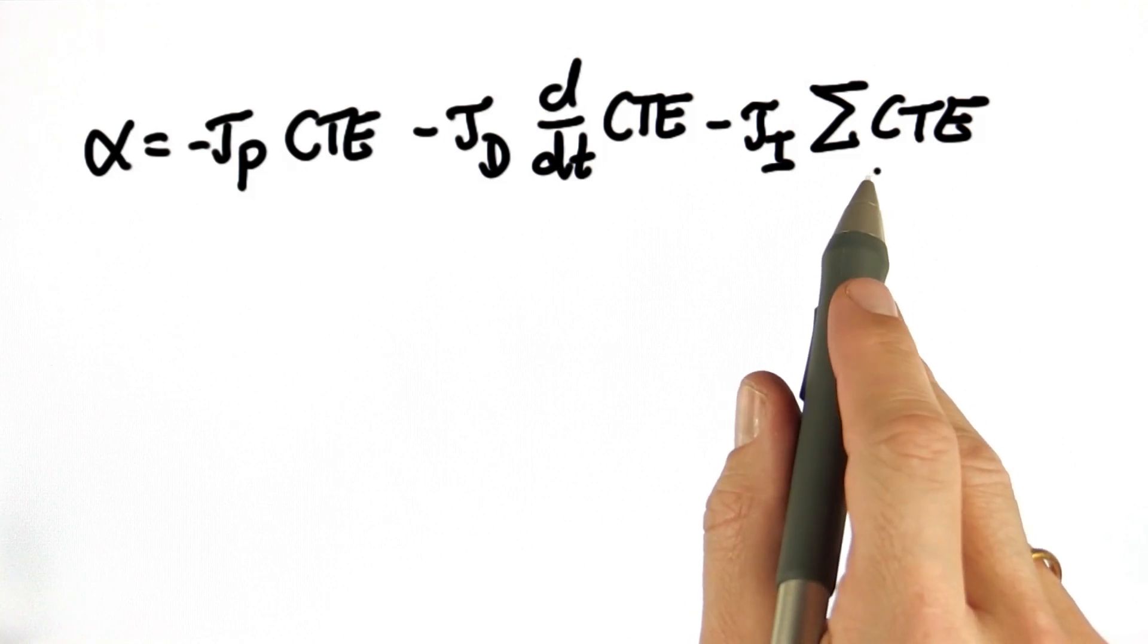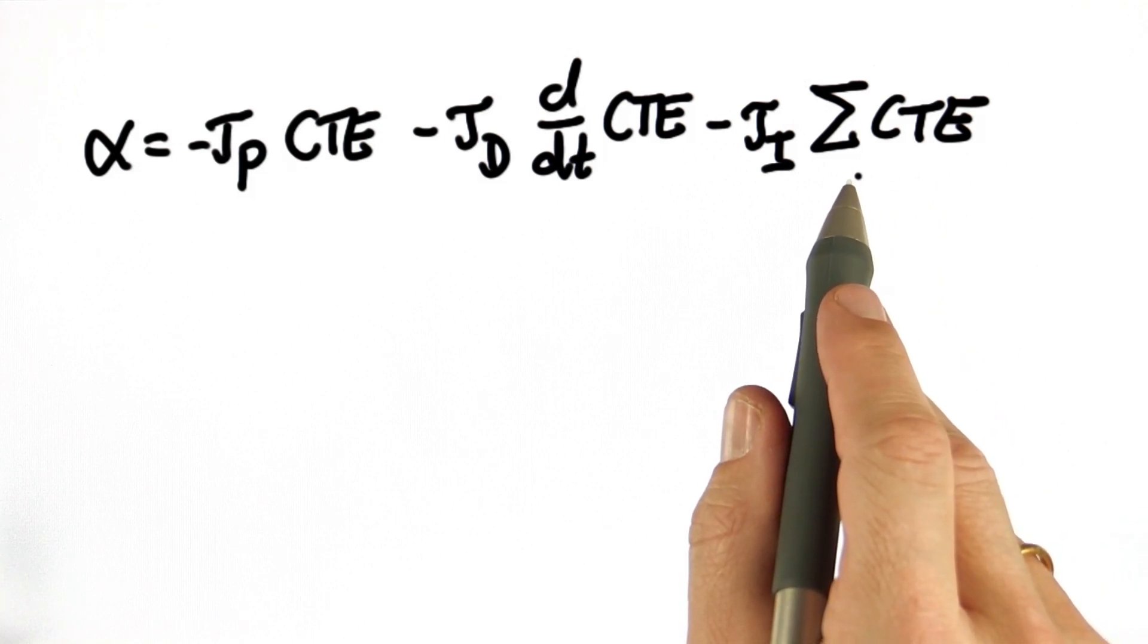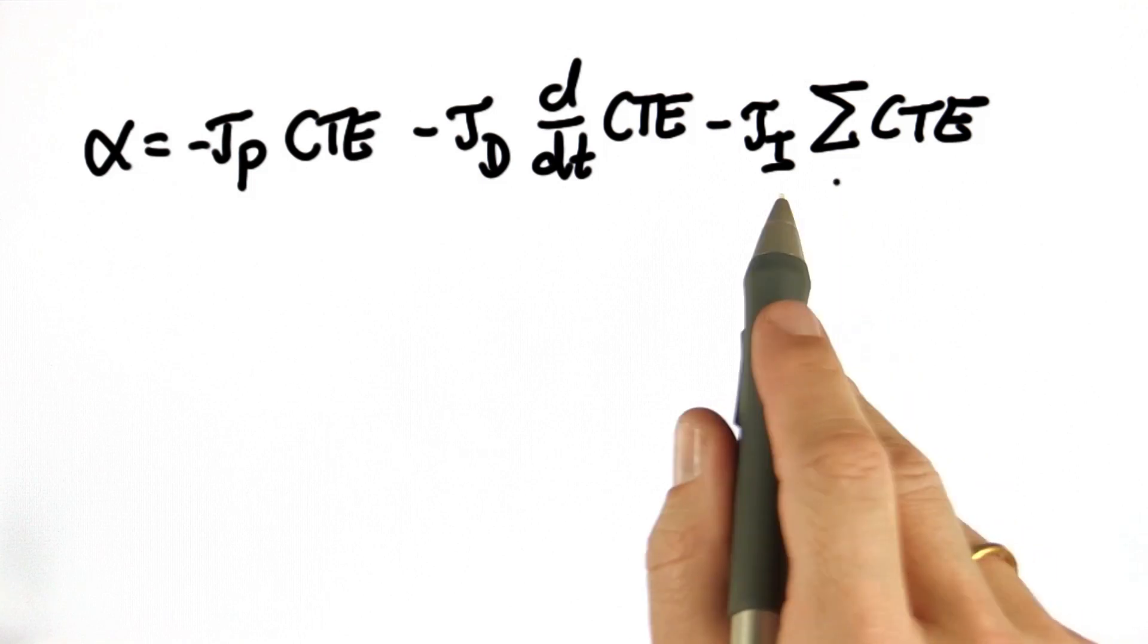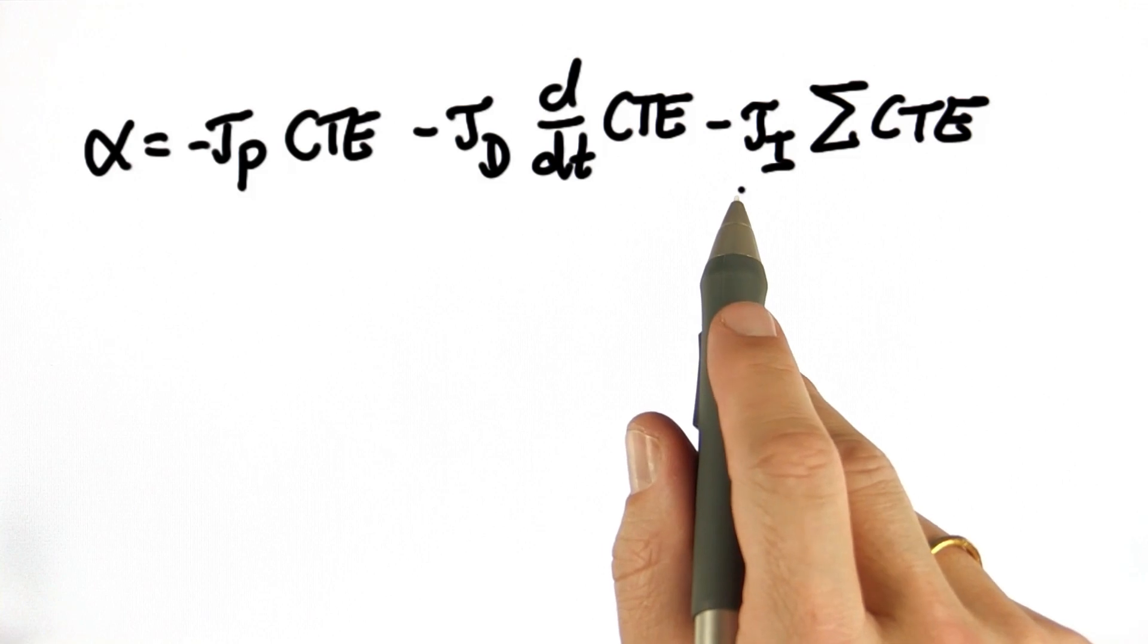This term is interesting. If we have a constant cross-track error of say 0.8, the sum will increase by 0.8 for each time unit and it will become larger and larger, and eventually it will correct the reverse motion.